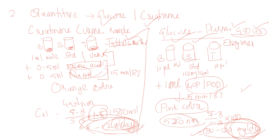For the viva, tell the examiner what you did — the principle, how you found out systematically, and the interpretation. For spotters, any five spotters will be kept in the lab; you have to identify and write them. Each spotter carries two marks, so five spotters total ten marks. That's a crisp summary of how to face biochemistry practicals. Thank you, students.